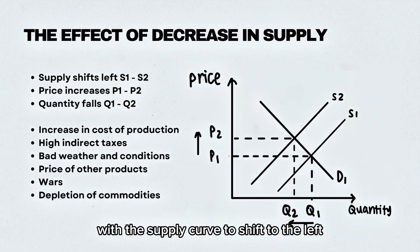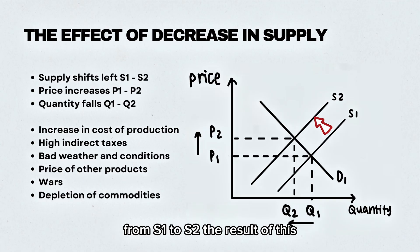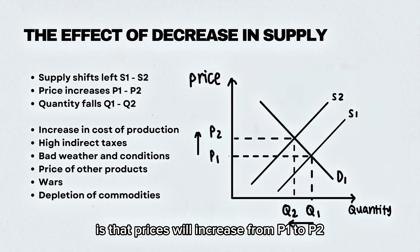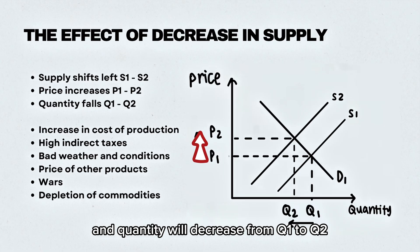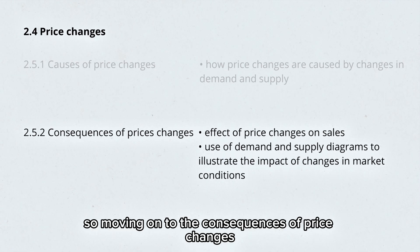The opposite effect: a decrease in supply will result in the supply curve shifting to the left from S1 to S2. The result is that prices will increase from P1 to P2 and quantity will decrease from Q1 to Q2.